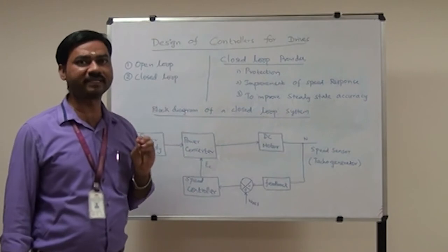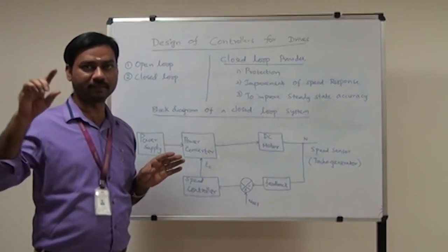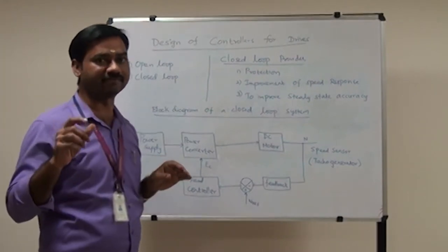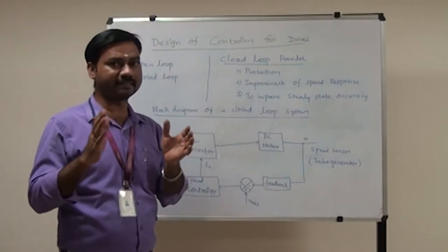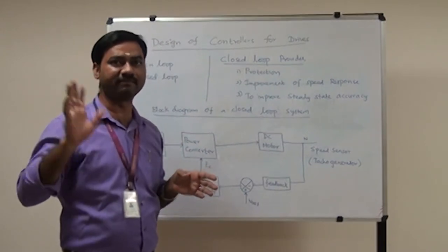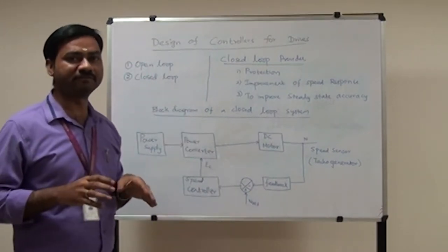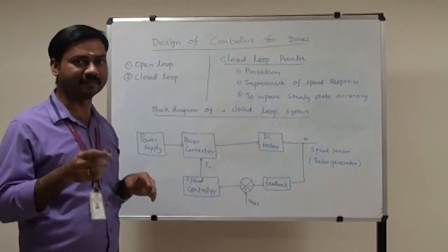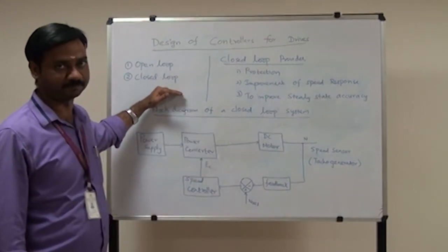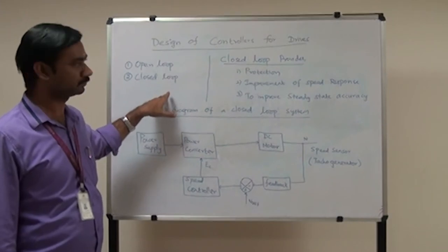Consider a fan with a regulator — that is an open loop controller. When you switch it on and adjust the regulator, you can increase or decrease the fan speed. It does not depend on climate conditions like summer or winter. In an AC system, however, you fix a reference temperature and the room temperature is maintained constant — that is a closed loop system. The closed loop system is better compared to the open loop system.